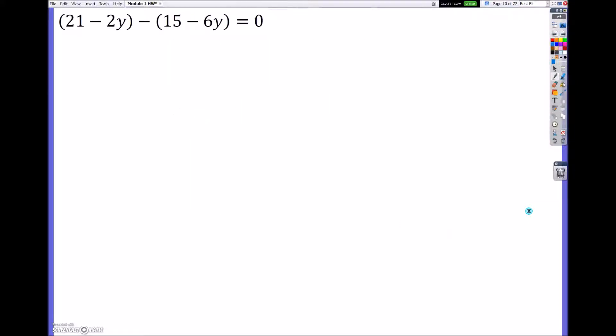So first what we have is all this junk, and we need to first simplify it. So what I have is I have this negative here. It's basically a negative 1. I'm going to distribute it to both of those terms. So I'm going to have 21 minus 2y minus 15 plus, and I'm getting plus because a negative times a negative is a positive, 6y. Now it's always important to remember I can only combine variables with variables that are the same exact ones and have the same exponent, and constants with constants.